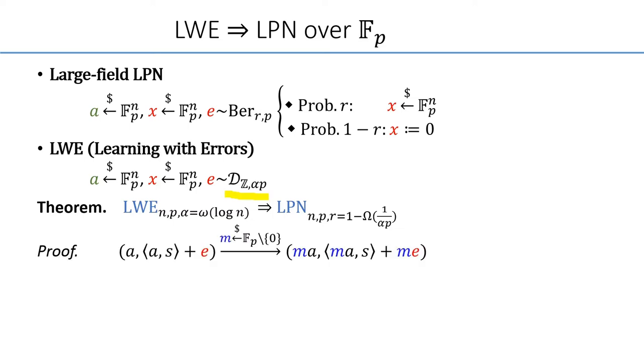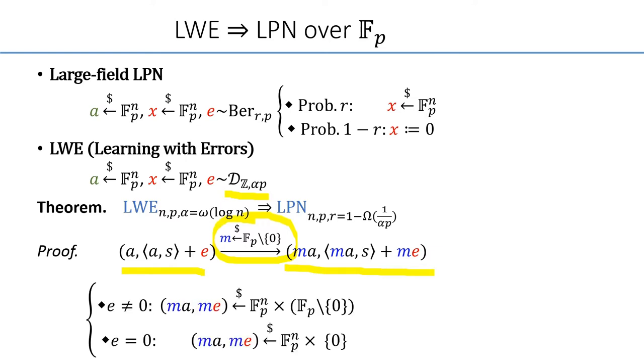That is, we can transfer every LWE sample into a LPN sample using a random mask M and multiplying M with the LWE sample. So, as we can see, MA is the product of a scalar and a vector multiplication, which is always uniformly random.